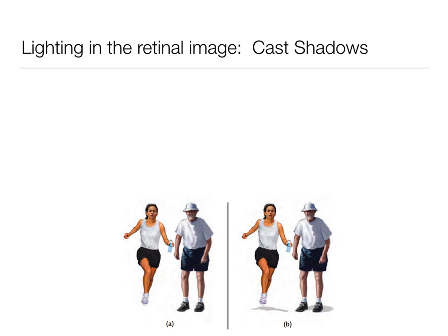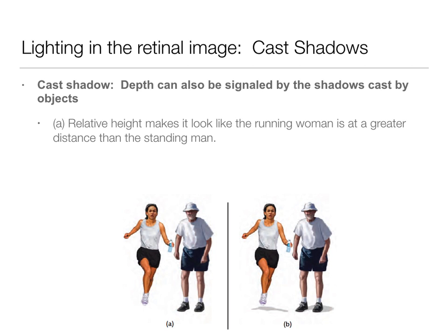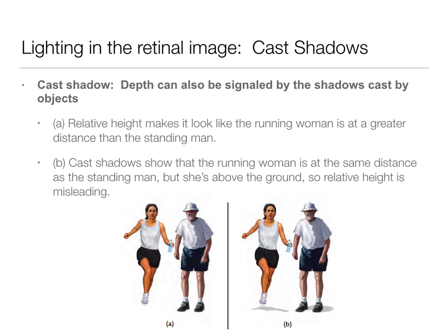The last lighting cue is cast shadows. Without shadows, a running woman appears to be at a different distance than a standing man. But with cast shadow information, they appear to be at the same distance — the shadow corrects the misleading relative height cue. Shadows and lighting are another way the visual system takes static 2D information and infers a 3D scene. That ends our lecture on static monocular cues.